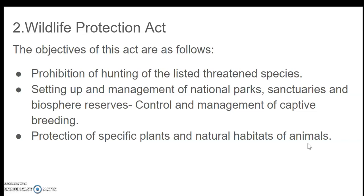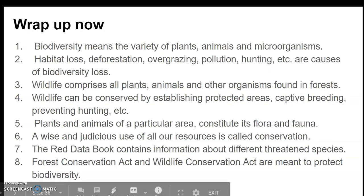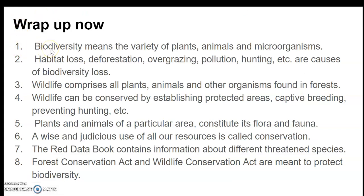We have completed this chapter. To recapitulate: biodiversity means variety of plants, animals, and microorganisms. Habitat loss, deforestation, overgrazing, pollution, and hunting are causes of biodiversity loss. Wildlife comprises all plants, animals, and other organisms found in forests. Wildlife can be conserved by establishing protected areas, captive breeding, and preventing hunting.